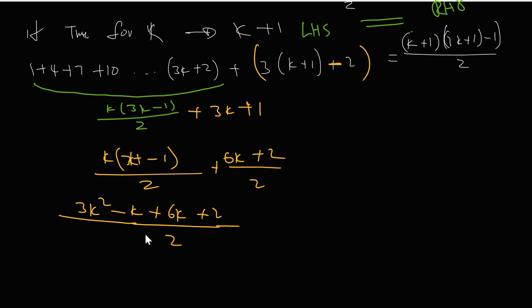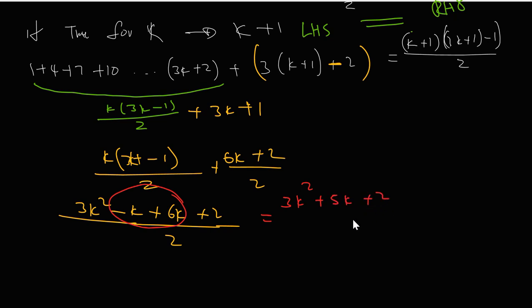Collecting like terms, the k terms combine to give three k squared plus five k plus two, all over two.